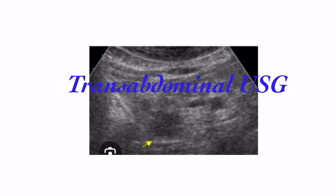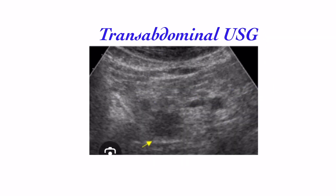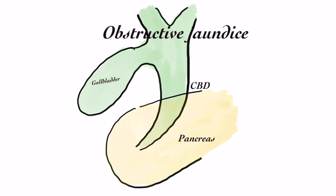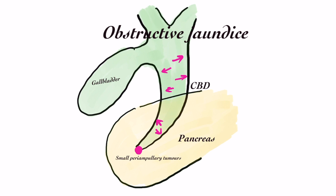If a pancreatic mass is detected by transabdominal ultrasound, it would probably be at least more than 2 cm in size. In this case, conventional CT scan without pancreatic protocol — double phase or triple phase — would suffice. However, in an obstructive jaundice case where conventional CT scan shows dilatation of the CBD till the lower end but no mass present or a doubtful lesion at the lower end, this case deserves a pancreatic protocol CT scan to delineate a small pancreatic tumor.